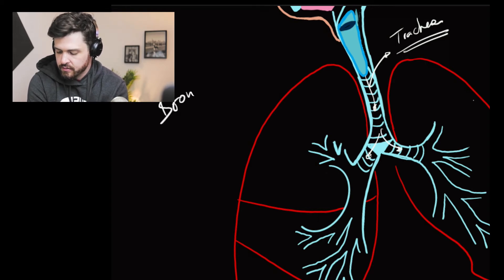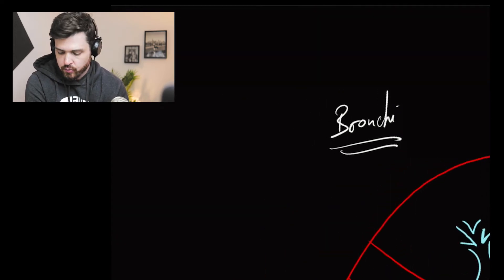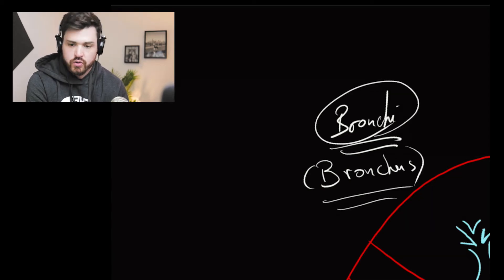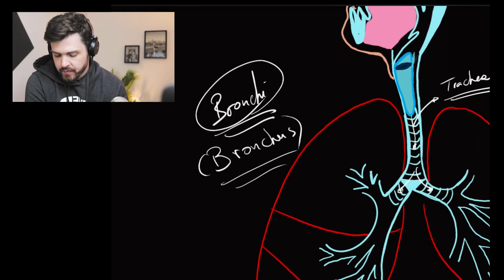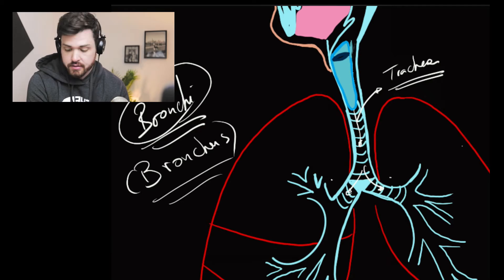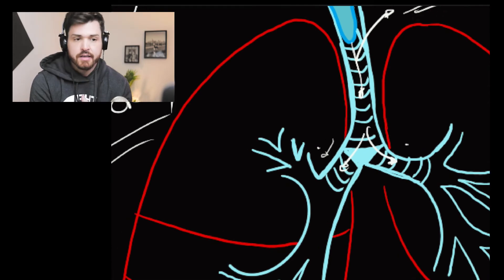Bronchi. Bronchi é o plural de bronchus. Bronchus é o brônquio. Bronchi são os brônquios. Então, aqui a gente tem the left main bronchus and the right main bronchus. And they subdivide into many other smaller parts.